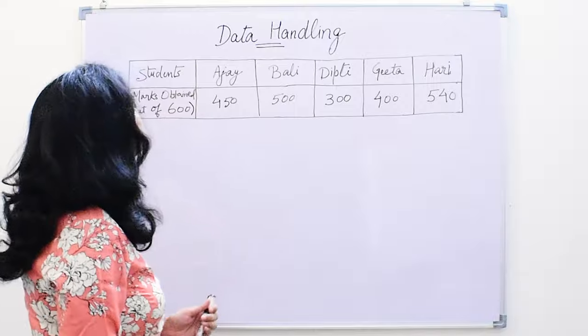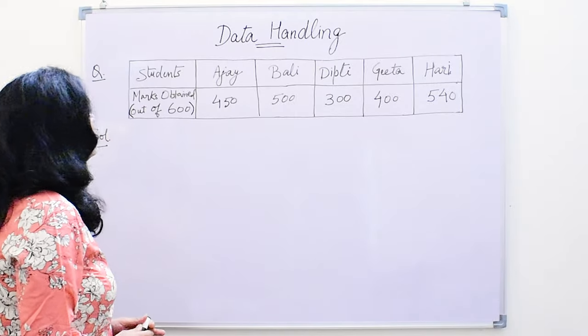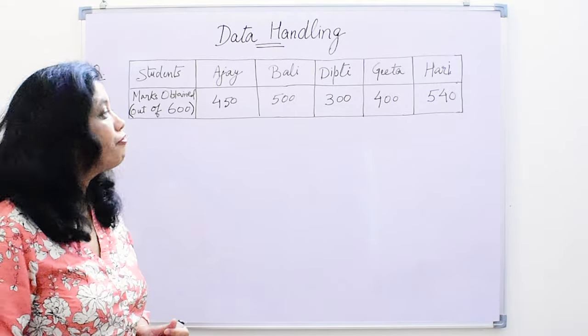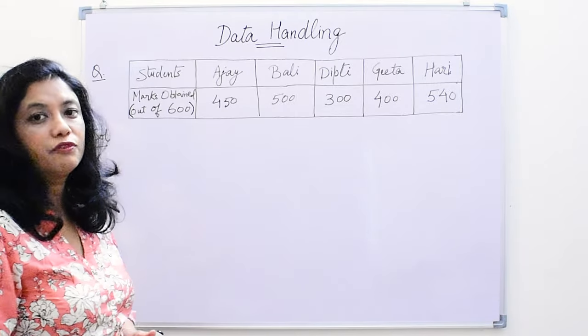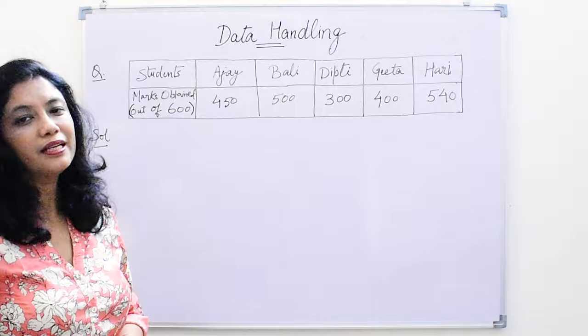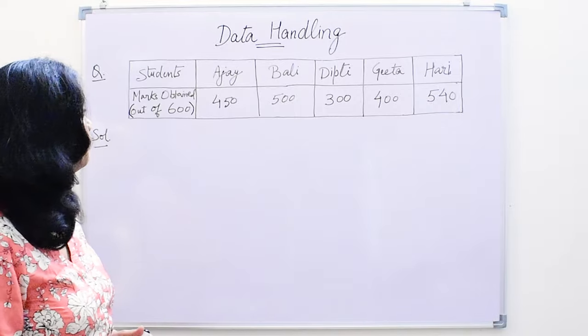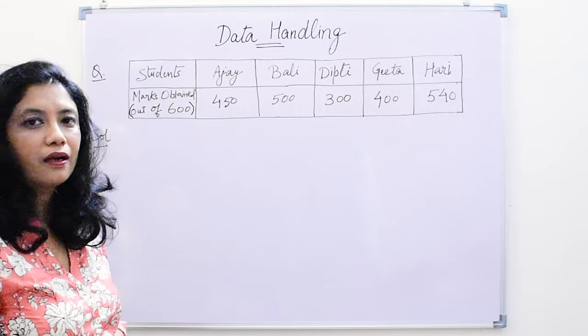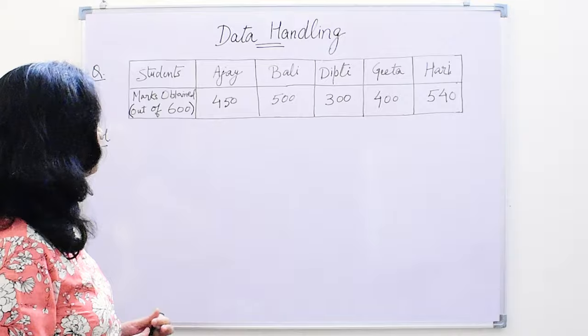Now we have been given this data — these are the marks of five students and we have to represent them on the bar graph. So let us see how we will make the bar graph for it.